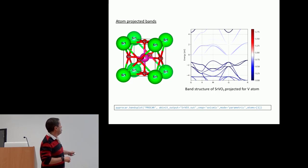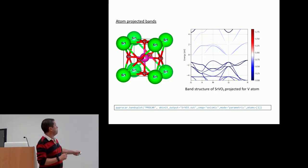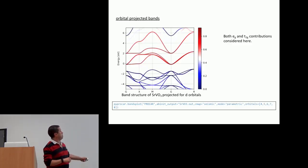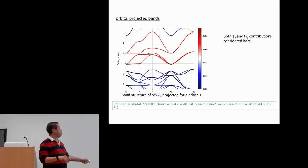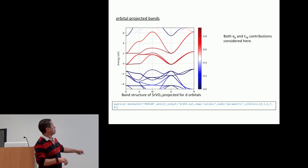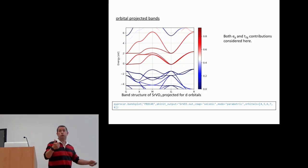You can do the same command but then say, let me just plot the contribution of the vanadium atom. This was a strontium vanadate, and you will see the contribution of the vanadium atom. You can also plot different orbitals — the only thing you have to do is specify which orbital labels you want from PyProcar. You can select one or several, and you can also include one atom plus the orbital in the same plot.